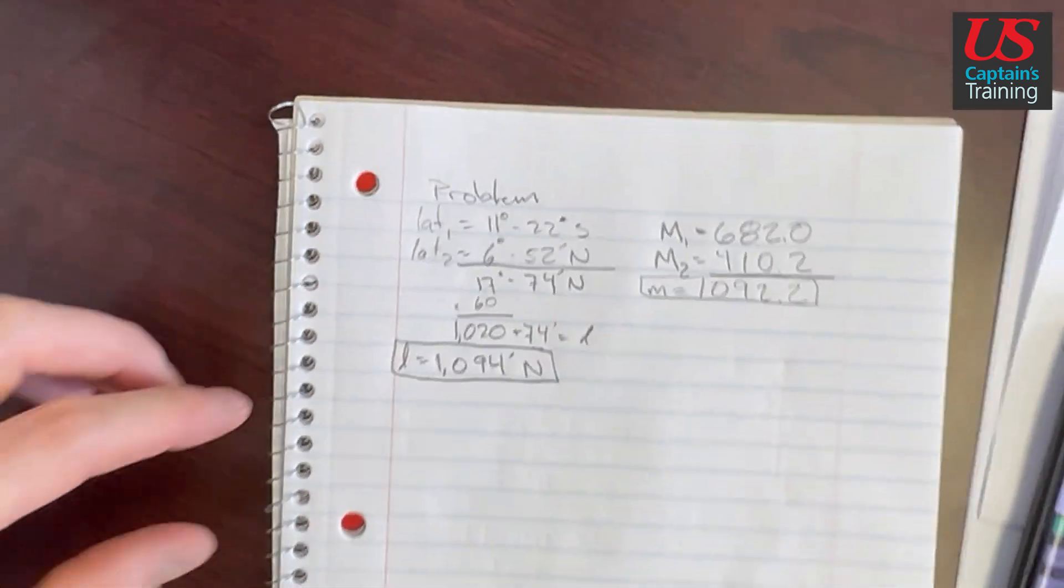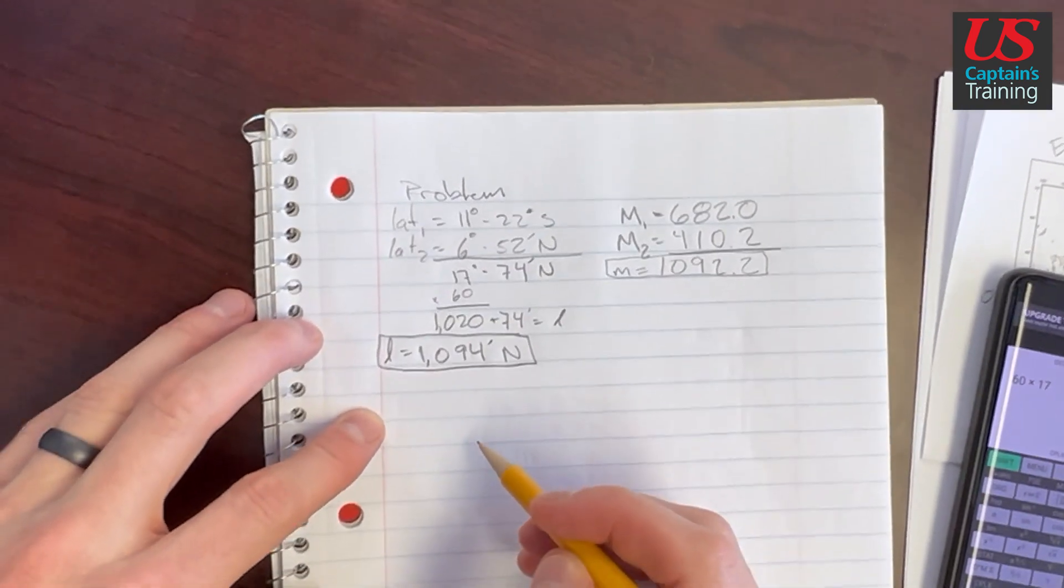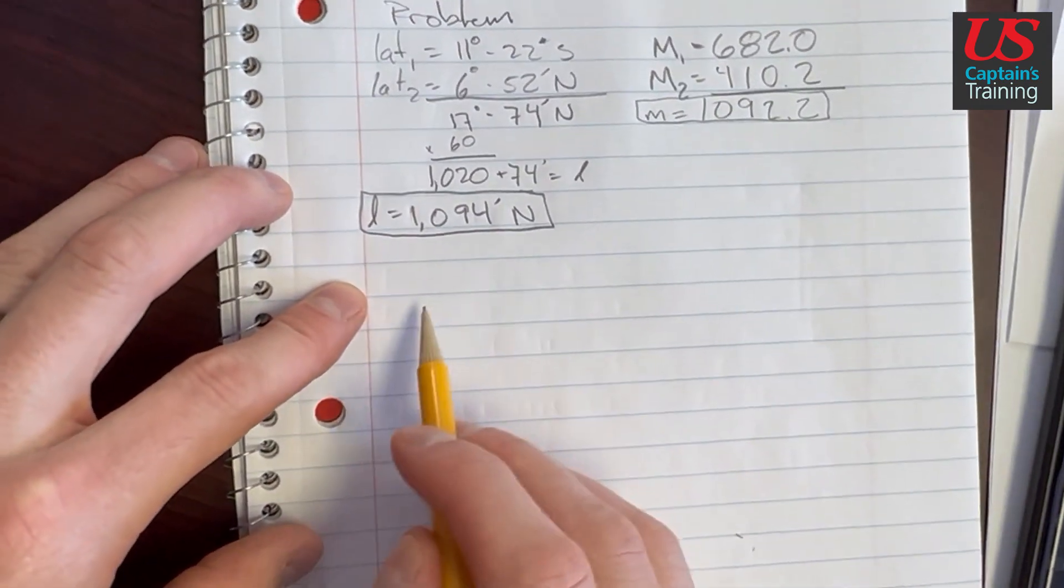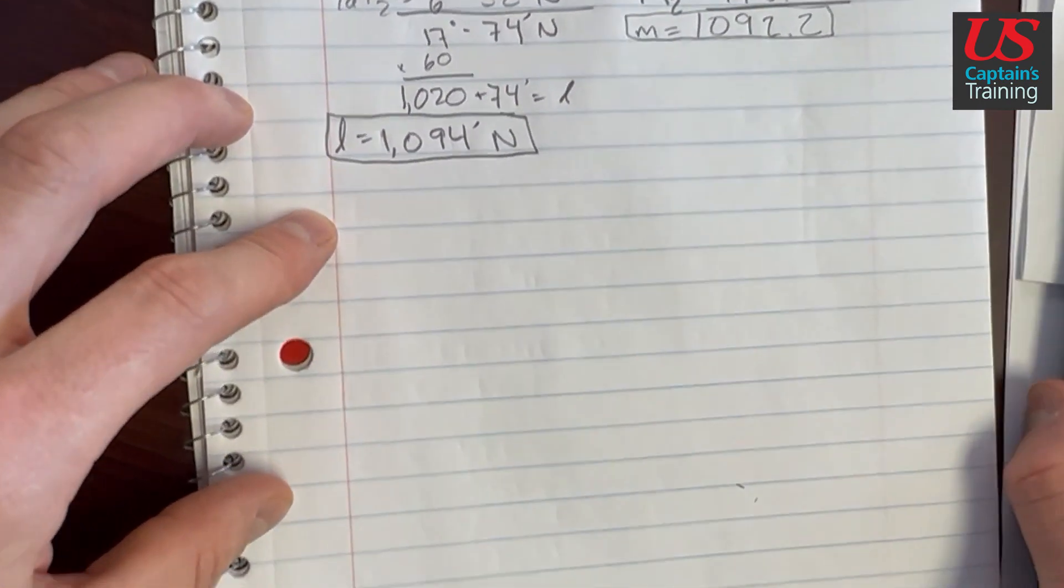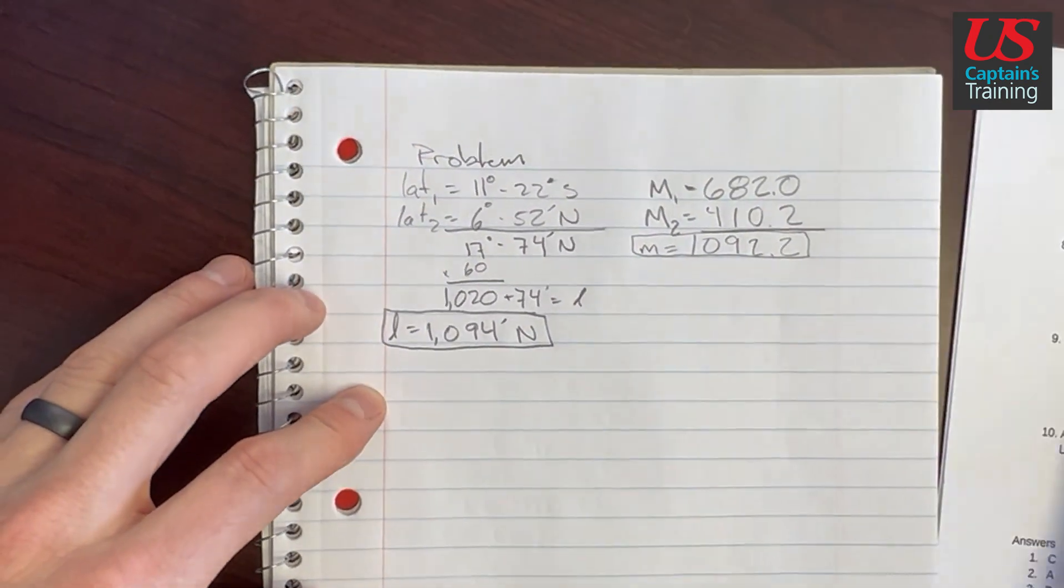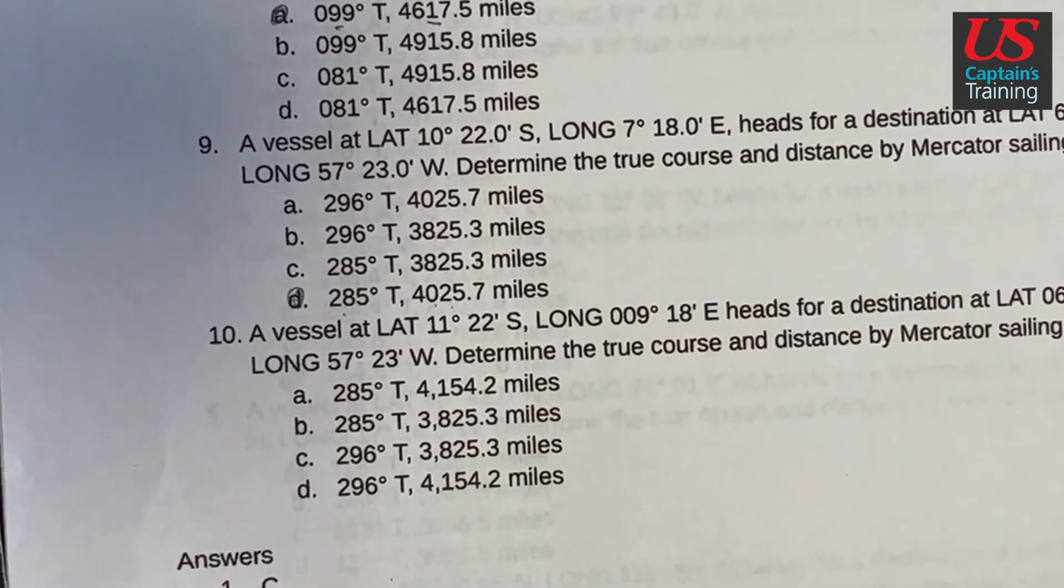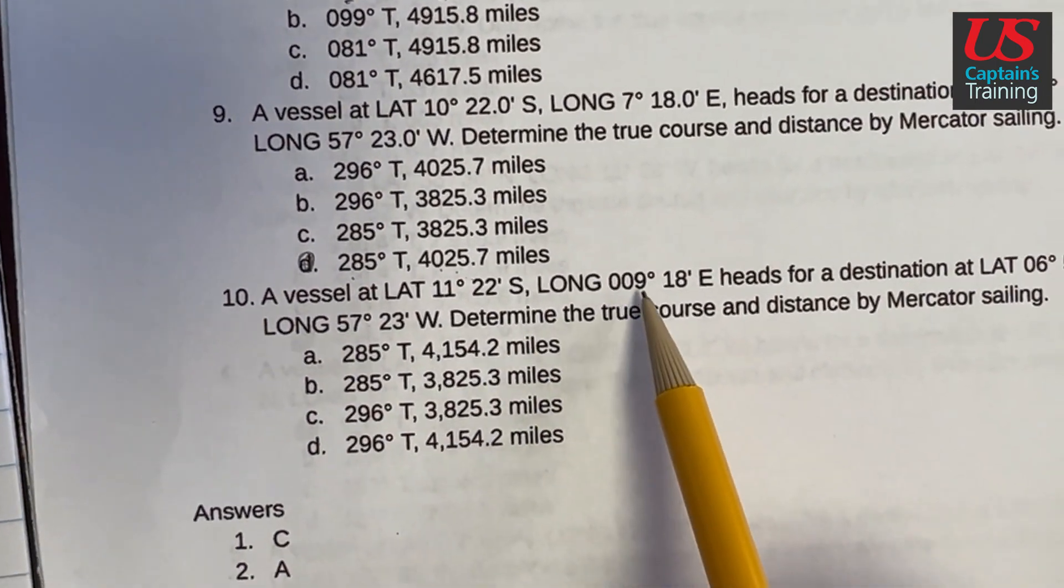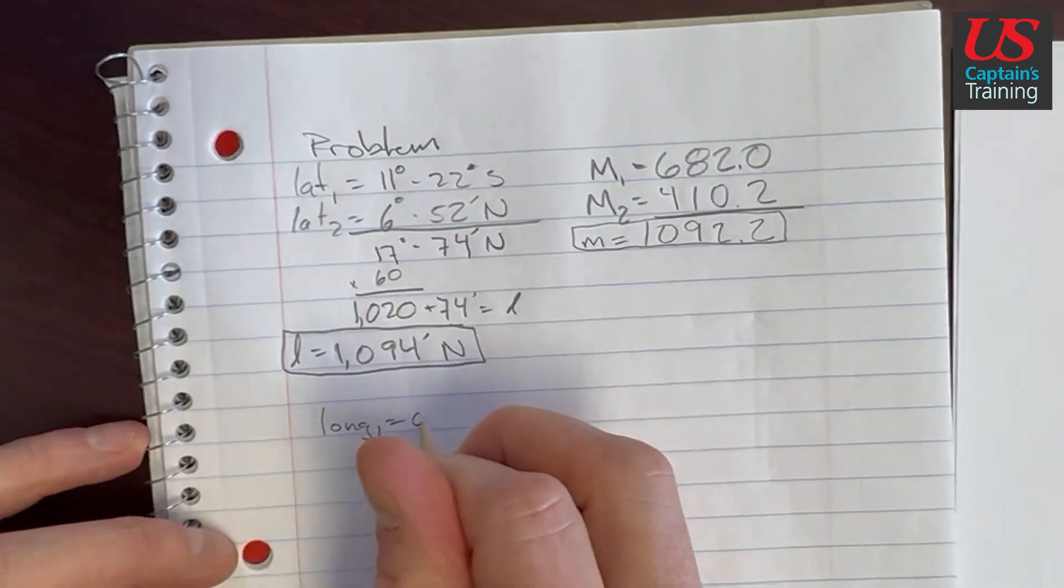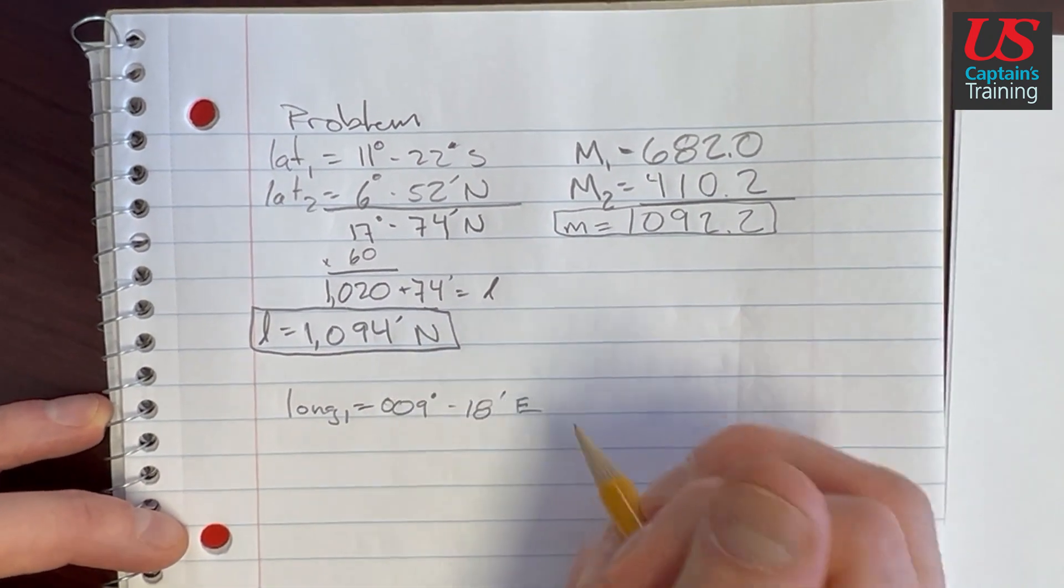Now we need to find D low. D low is the difference between longitude 1 and longitude 2. And that's going to give us how far we traveled east and west. So let's get them from our problem. We need longitude 1. Longitude 1 is equal to 9 degrees 18 minutes east.